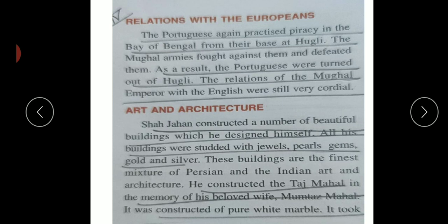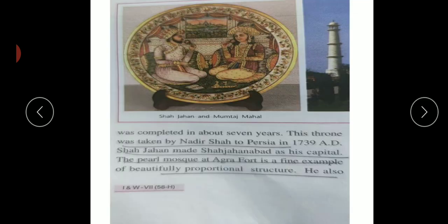Shah Jahan used many jewels, pearls, gems, silver and gold in his buildings. He built a wonderful mixture of Persian and Indian architecture, like the Taj Mahal - built in memory of his beloved wife Mumtaz Mahal - constructed with pure white marble. The Taj Mahal was completed in seven years. His throne was later taken by Nadir Shah to Persia in 1739 AD. Shah Jahan made Shah Jahanabad his capital; the Pearl Mosque at Agra was a fine example of proportional structures.